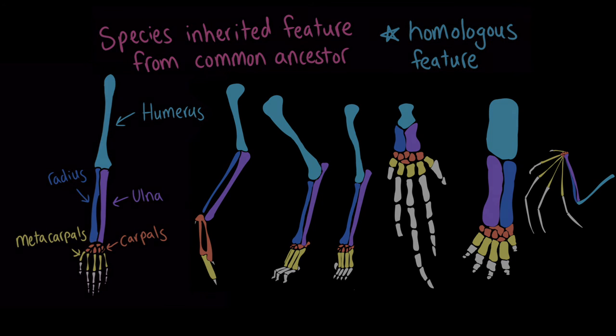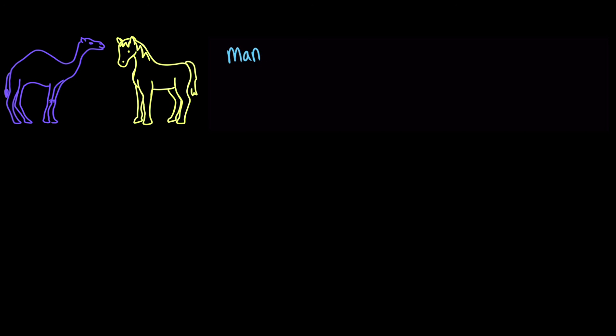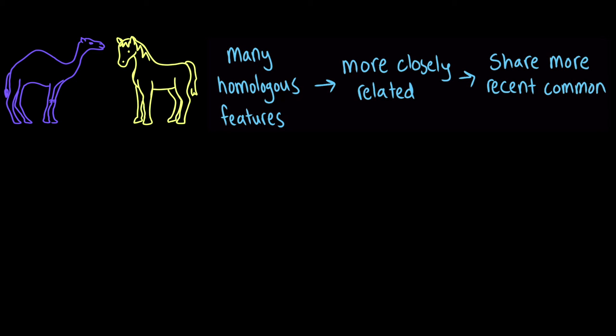Compared to species with few similarities, two species that share many homologous features are likely to be more closely related, which means that they are likely to share a more recent common ancestor.